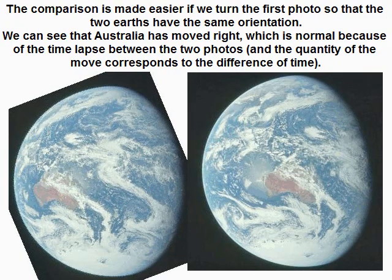The comparison is made easier if we turn the first photo so that the two Earths have the same orientation. We can see that Australia has moved right, which is normal because of the time lapse between the two photos, and the quantity of the move corresponds to the difference of time.